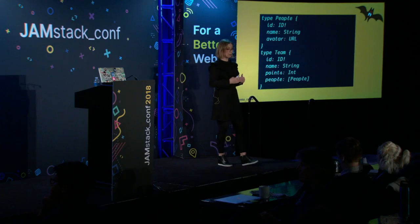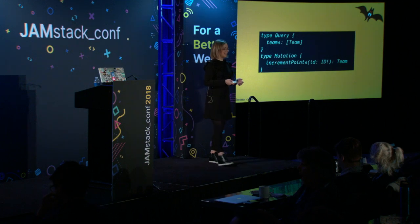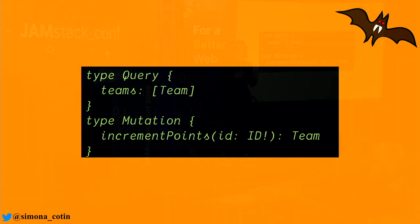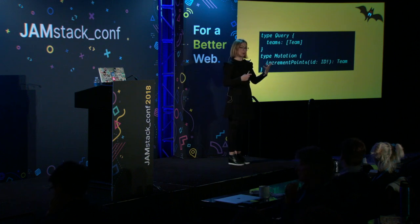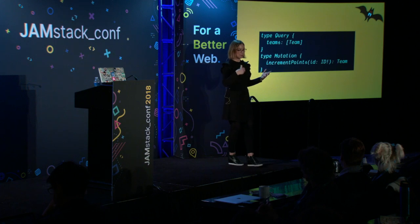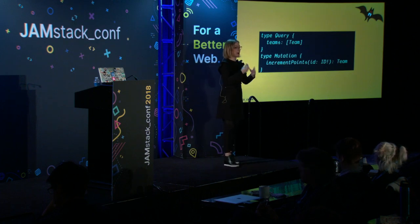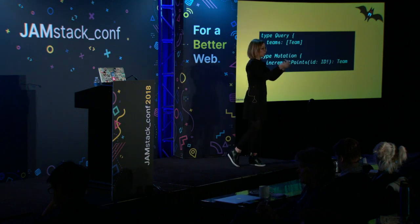We can also have nested types — for example, a Team type that returns a list of People. We also have query and mutation types, which are essential because they define the operations we can run on our data. We can retrieve a list of teams returning an array of type Team, or execute a mutation to increment points filtered by ID. Query is the equivalent of a GET operation, and mutation is the equivalent of POST or PUT — queries read data, mutations modify data on the server.